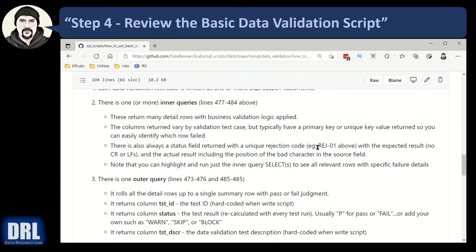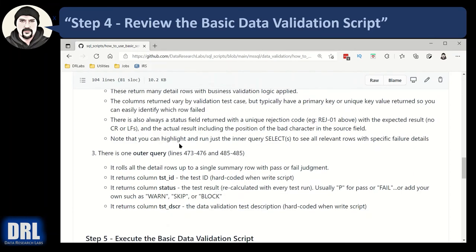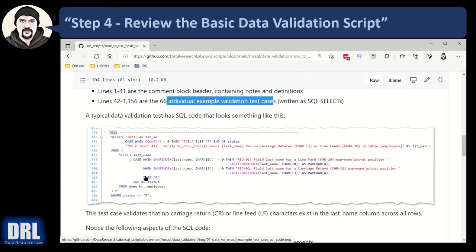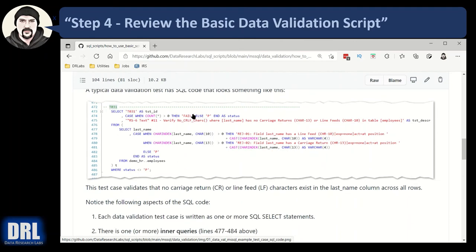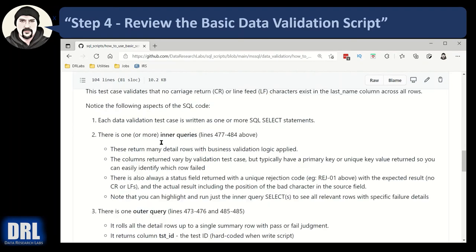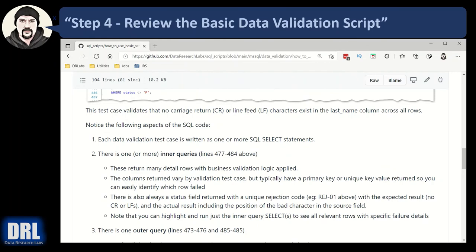The status field we talked about earlier — we always put a rejection code in to give details on what failed. And if you've seen the previous videos, you saw me highlight the inner SQL only and execute it. That way I can get the actual detail results rather than running the entire test case and getting a simple pass or fail with a count. I encourage you to go in and run this yourself, play around with it, and learn it.